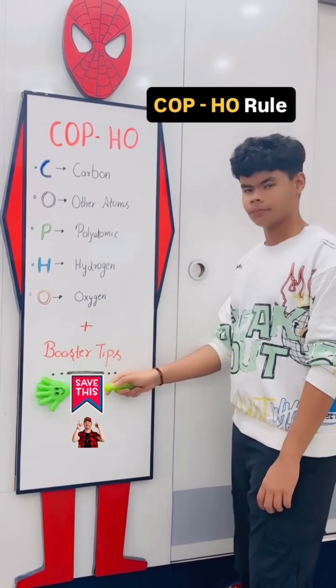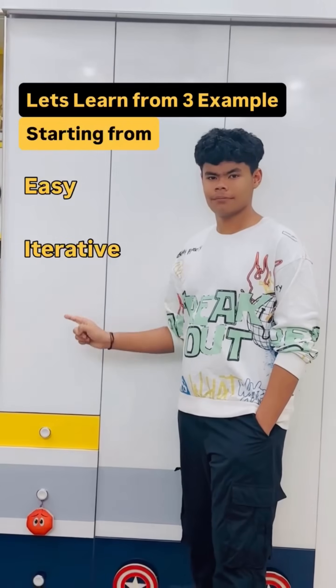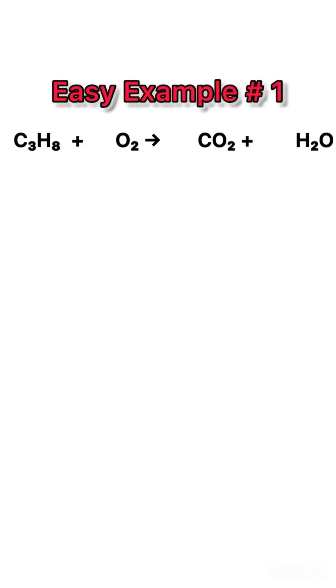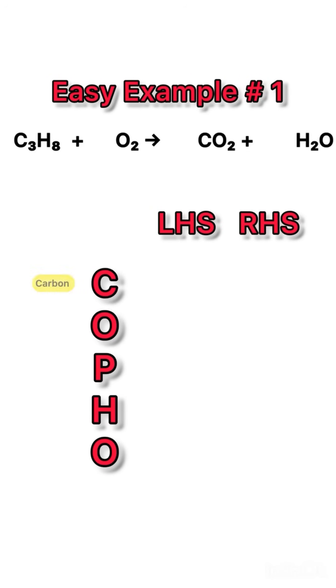And there's a booster tip at the end too. We'll learn through three examples. Example one, this one is easy and straightforward. Let's apply COP-HO to the first equation and compare number of molecules on the left hand side to the right hand side. C carbon, left side it is 3 in C3H8 and right side it is 1 in CO2, so put 3 before CO2 to balance. There is no other type of molecule here, so cross. Similarly, no polyatomic, so cross.